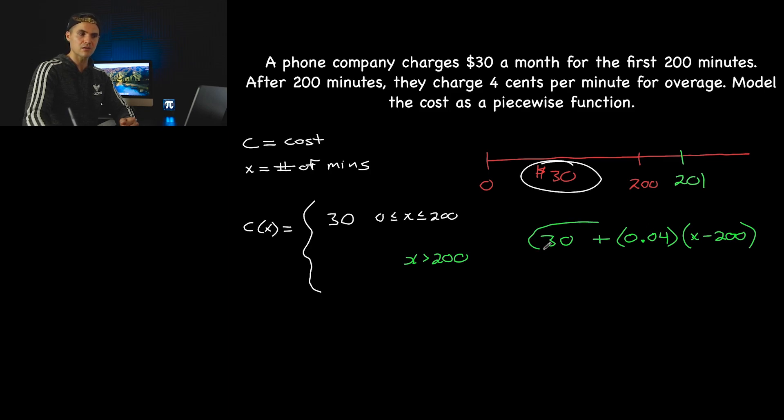So that would be 100 overage minutes and you're getting charged $0.04 per overage minute. And so this here is basically going to be the equation. That we input over here. But when you input the equation here, it has to be simplified. So what that means is we're going to have to distribute this 0.04 in the brackets.